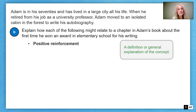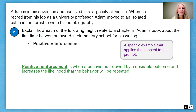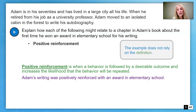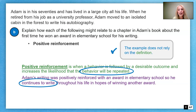Positive reinforcement is defined as when a behavior is followed by a desirable outcome, increasing the likelihood that the behavior will be repeated. A strong specific example: 'Adam's writing was positively reinforced with an award in elementary school, so he continues to write throughout his life in hopes of winning another award.' This addresses both the reinforcing event (the award) and the repeated behavior (continuing to write), so it does not rely solely on the definition.